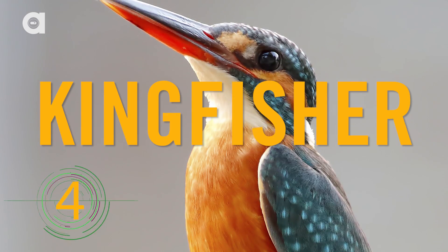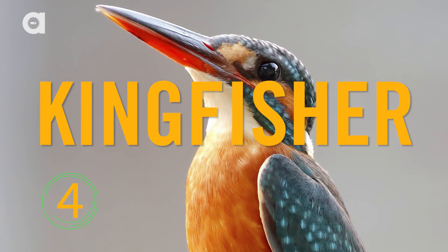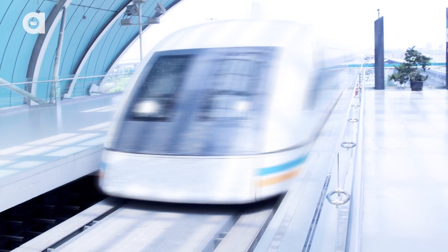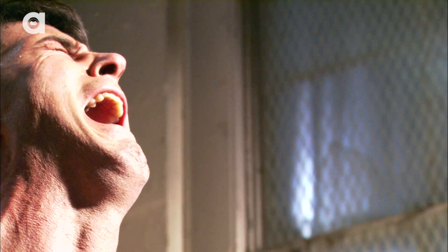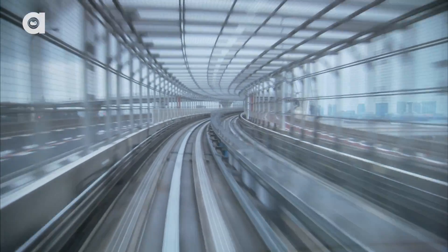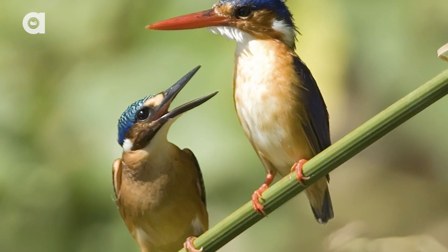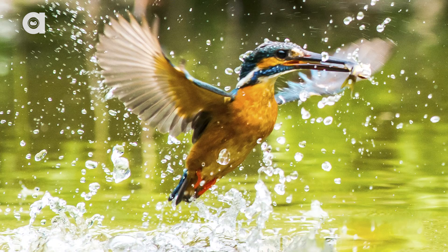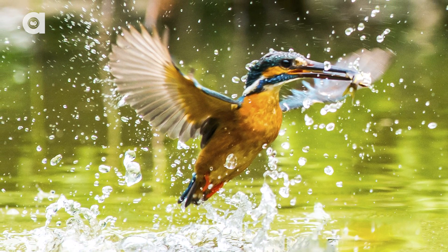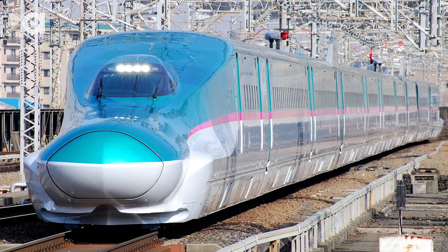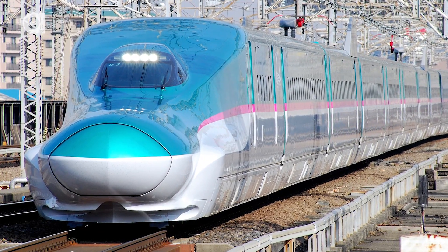Number four, the Shinkansen bullet train design is inspired by birds. Japan debuted their bullet train in 1964 but discovered that when it would exit tunnels at high speeds there was a loud boom sound that no one liked. New train models have been introduced over the years and one of the most successful designs mimicked the Kingfisher bird's beak. The Kingfisher dives into the water to catch fish and there is minimal splashing. Harnessing the same beak shape, the Shinkansen bullet train slices through the air without a sound.